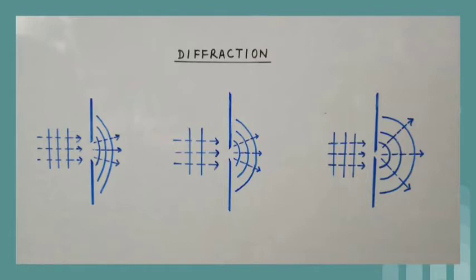Diffraction of sound waves and radio waves is very common, as their wavelengths are large and obstacles or apertures of that size are commonly found.